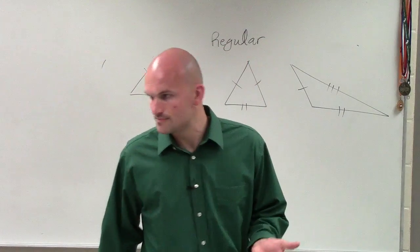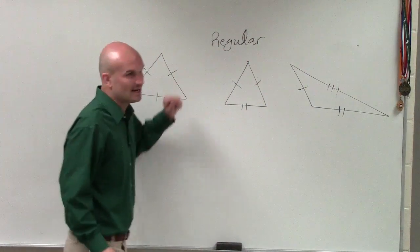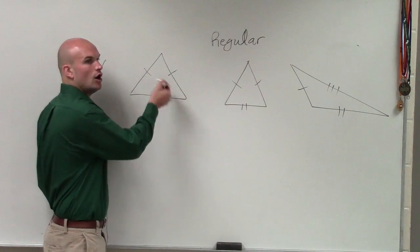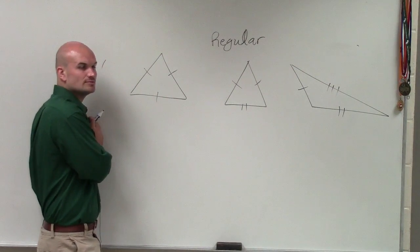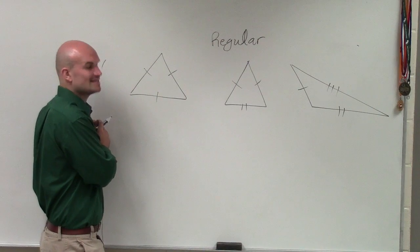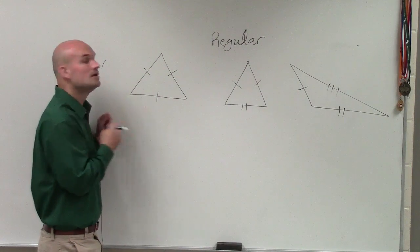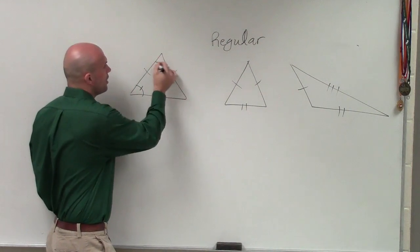If you look at these triangles, when we're talking about an equilateral triangle, all the side lengths are equal, but what else is equal? The measure of the angles are also all equal in measure.